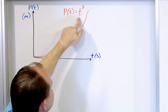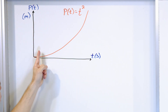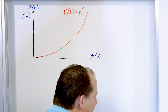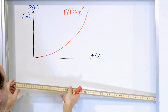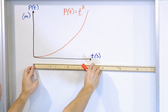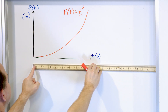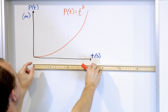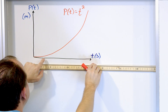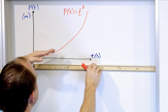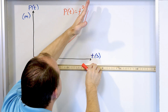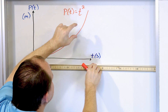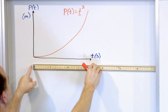At one second in the future, one squared is one, so I'm one meter away from the starting point. This is plotting how far away I'm getting from the origin as a function of time. Because as time goes on — one second, two seconds, three seconds, four seconds — you can see that I start pulling away very, very rapidly, covering more distance in the same amount of time. So I'm sort of accelerating, speeding up as time goes on.